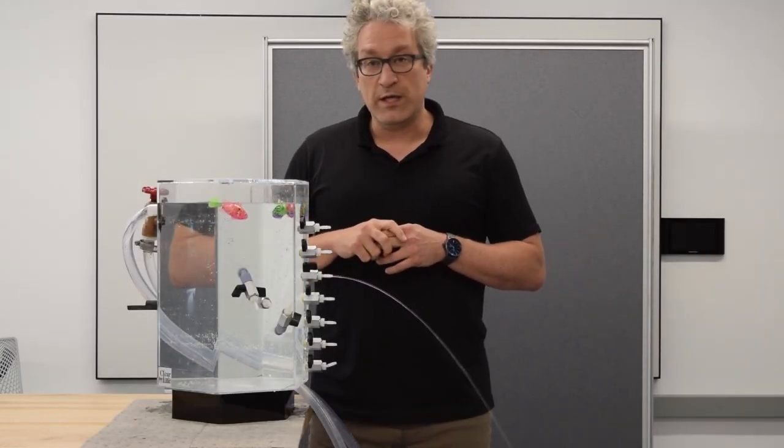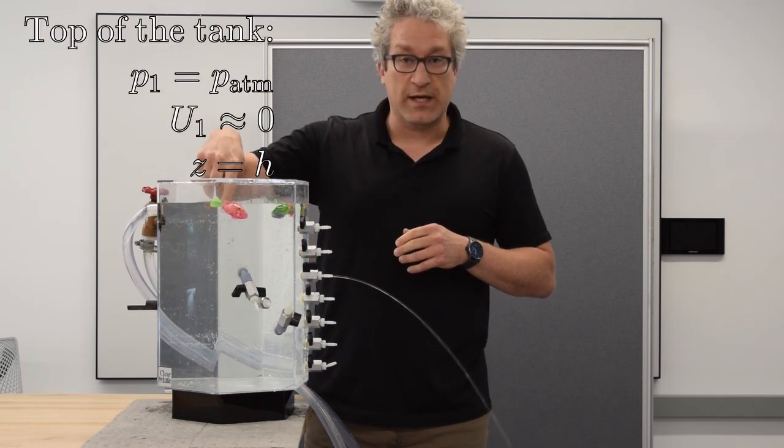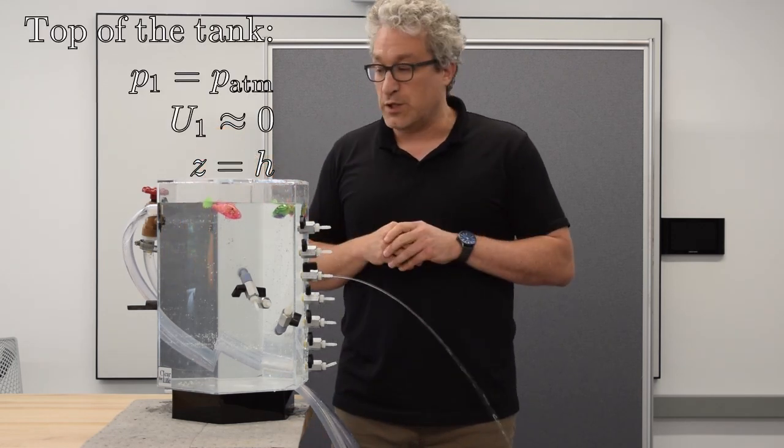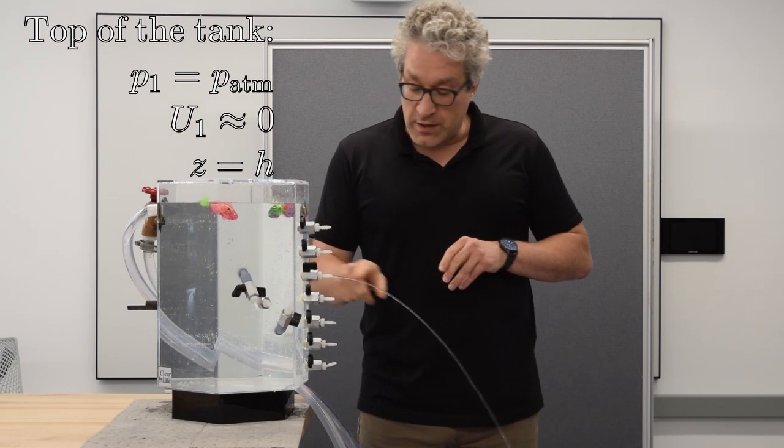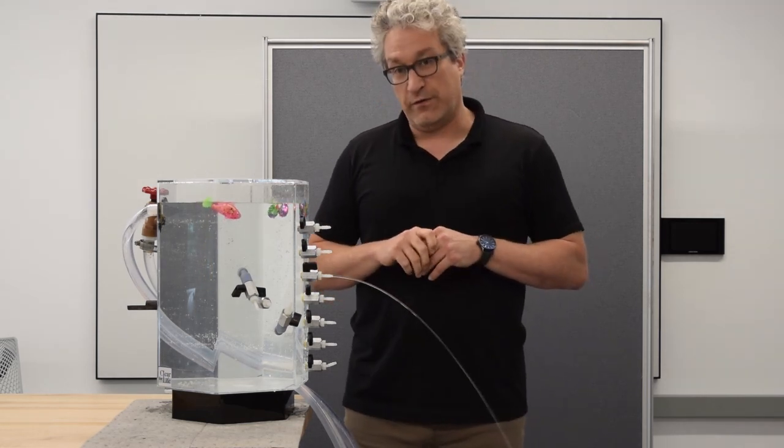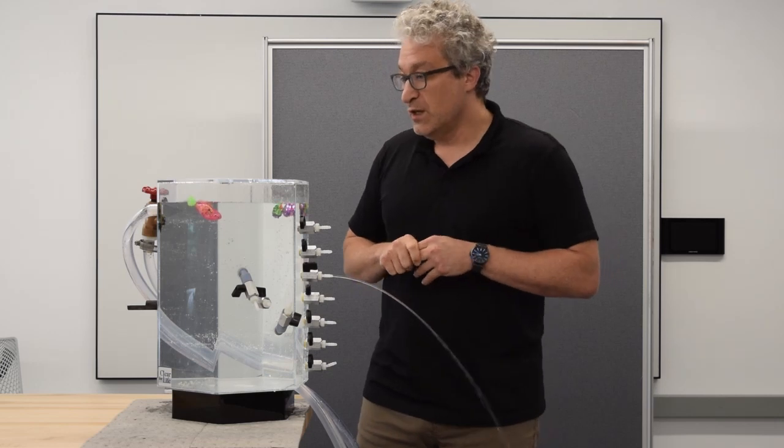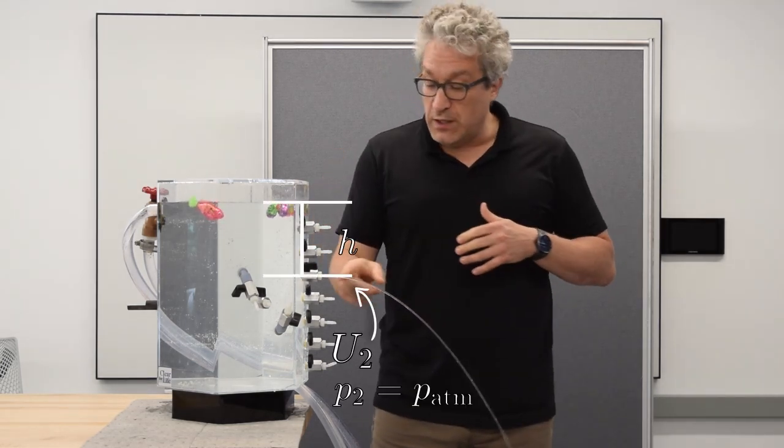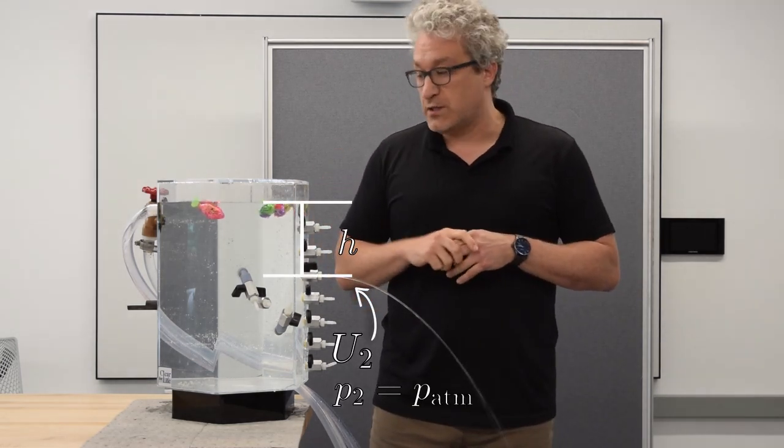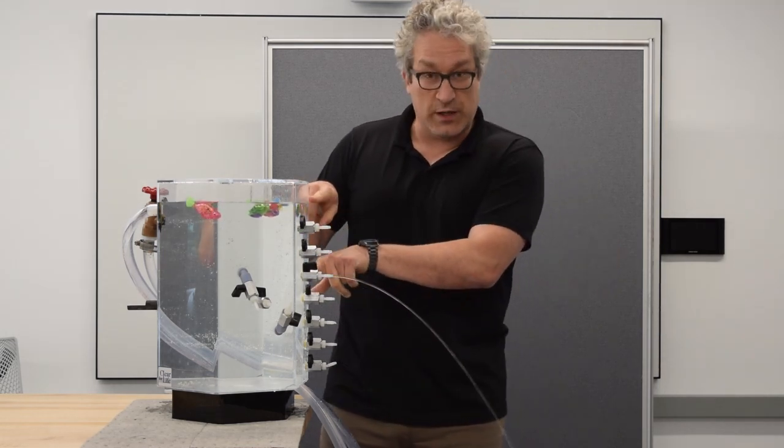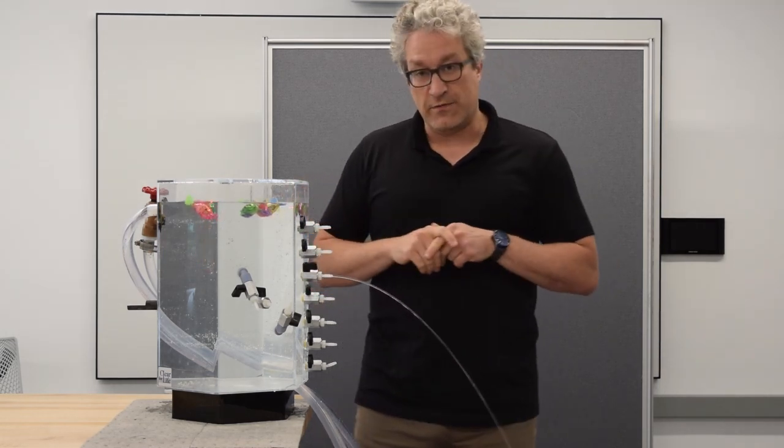We can use the integral form of the Bernoulli equation to compare the water at the top of this tank, which has gravitational potential energy but no speed, and the water issuing out of this valve, which has speed but not as much gravitational potential energy. By doing this, we can relate the speed u with which this exhausts to the original height of the tank, specifically the difference between the heights of the top of the tank and this valve.